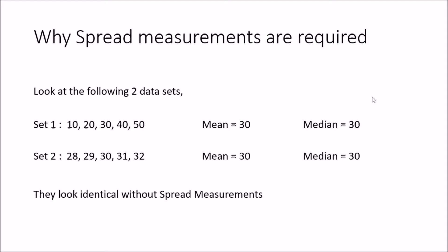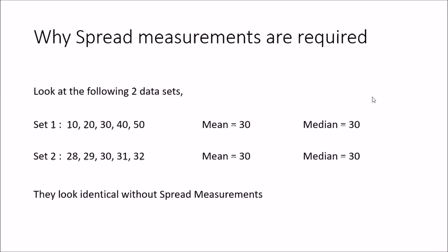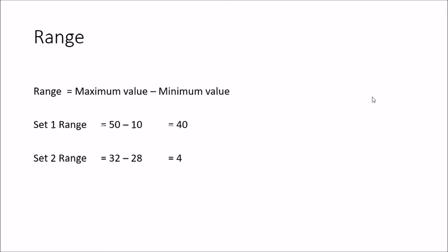In order to say that these two groups are different, we have to use spread measurements. The simplest spread measurement is the range. Range is the maximum value minus the minimum value. In set 1, the range is 50 minus 10, that is 40, and in set 2 the range is 32 minus 28, that is 4. So when you give central tendencies along with spread measurements, you can definitely say those two data sets are different.